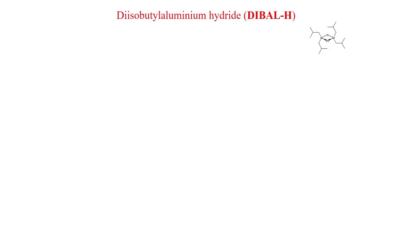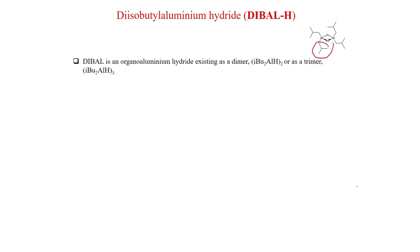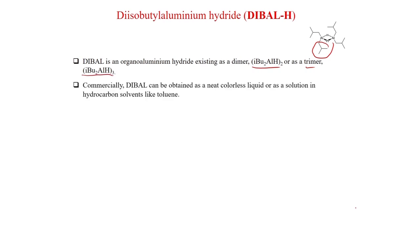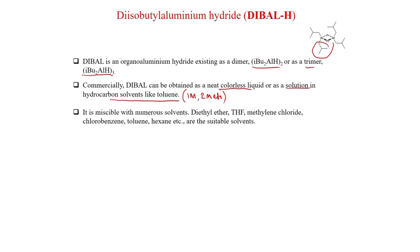DIBAL-H's full name is diisobutylaluminum hydride. As you can see in the structure, this is the isobutyl group, aluminum is there, and a hydrogen bridge is there. It exists as a dimer (isobutyl-AlH)₂ or as a trimer (isobutyl-AlH)₃. Commercially, DIBAL-H can be obtained as a neat colorless liquid or as a solution in hydrocarbon solvents like toluene — generally 1 molar, 2 molar, etc. It is miscible with numerous solvents like diethyl ether, THF, methylene chloride, chlorobenzene, toluene, and hexane.